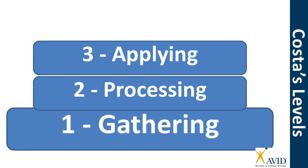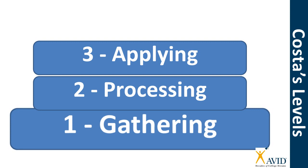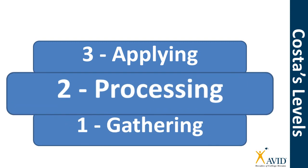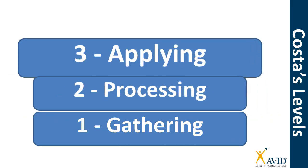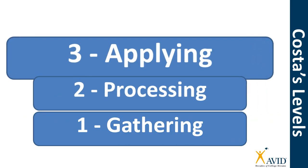Level one tasks tend to be very simple and involve very little complex thought. Level two tasks are more difficult and involve more thinking. And level three tasks are the most rigorous and challenging activities you can engage in. As you might imagine, the more you are working and thinking, the more you're going to learn.